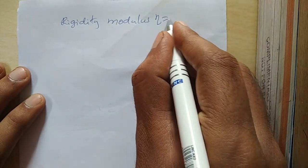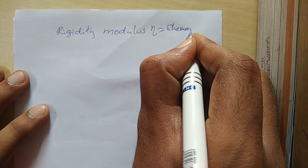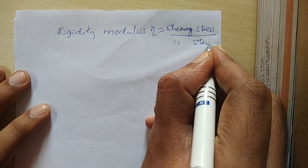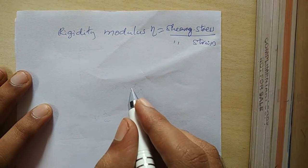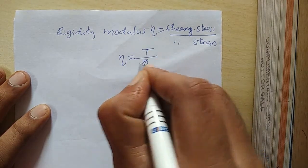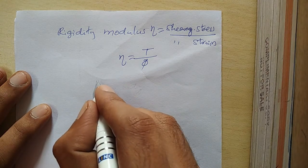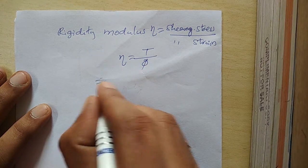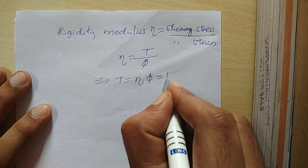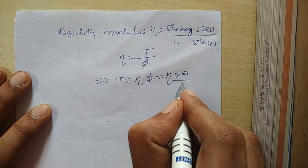The rigidity modulus is shearing stress divided by shearing strain, so η = T/φ. From this relation we have T = ηφ, and substituting from equation 1, T = η × rθ/L.